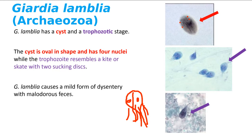If I asked you on a practical to describe the cyst of Giardia, you'd say: oval with four nuclei. If I asked you to describe the trophozoite of Giardia: looks like a kite, and it has two sucking discs.